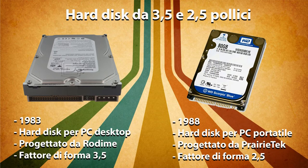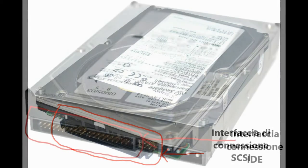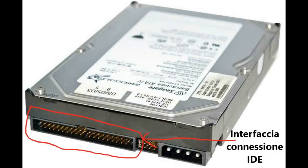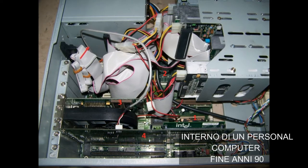Nel settore degli hard disk cominciarono ad affermarsi altre due interfacce di connessione. La prima era SCSI, che garantiva una velocità di trasferimento dati molto alta. Purtroppo, per il suo prezzo troppo elevato, questa interfaccia è stata comunemente usata solamente in ambito aziendale e veniva montata su PC di fascia alta. L'altra interfaccia di connessione era l'IDE, che stava rapidamente superando l'ST506 nel mercato desktop. Concepita da Western Digital e successivamente da molti altri produttori, fu di uso comune nei personal computer dal 1990 fino alla metà degli anni 2000.